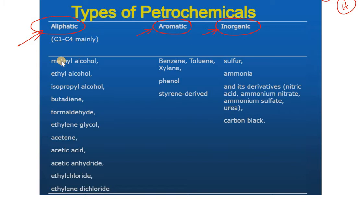Petrochemicals are classified as aliphatic and aromatic. Inorganic means carbon is not present as an organic compound. The types of petrochemicals are primarily: aliphatic, aromatic, and inorganic. Petrochemicals are hydrocarbons because the basic components are hydrogen and carbon.